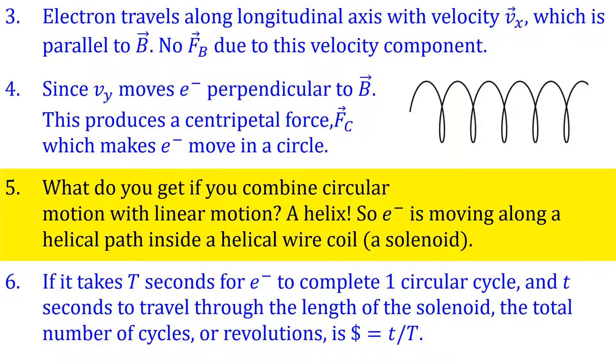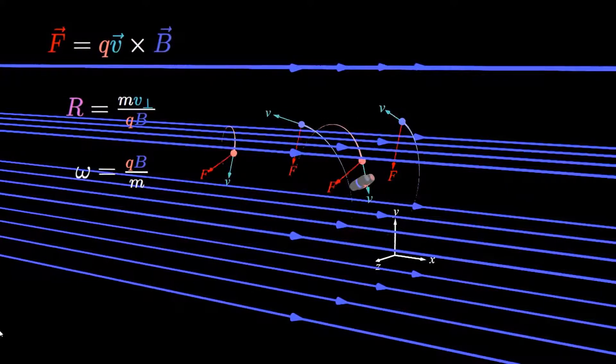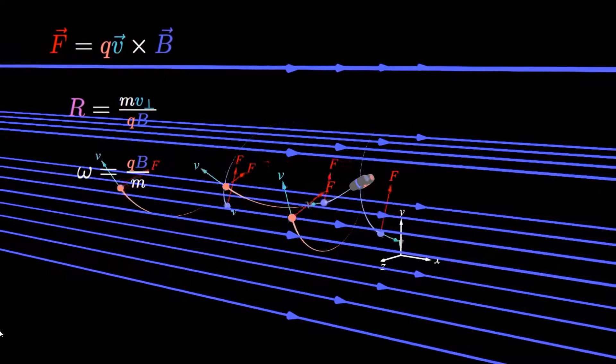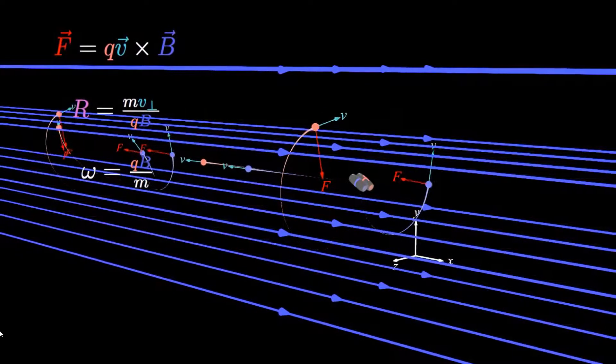So in essence, the electron is moving along a helical path in a helical coil solenoid, a helix in a helix. This animation is giving you a glimpse of several particles moving along a helical path in a magnetic field. In this case, they're going from right to left. In our case, they're going from left to right, but you get the idea.